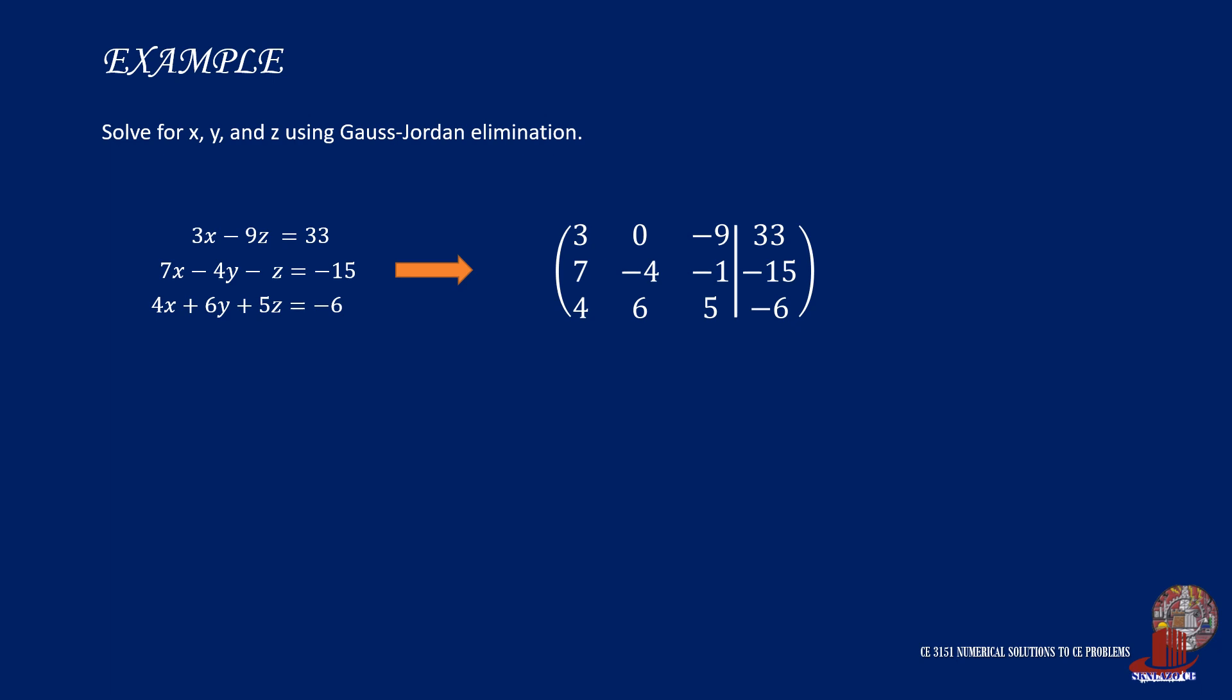Then we proceed with the elimination by creating a pivot element placed at element A11. In this case, we choose the first row to be the pivot row, and then we create 1 for the first element. That can be done by dividing the whole row by 3. So take 3 divided by 3 to have 1, 0 divided by 3 is 0, negative 9 divided by 3 is negative 3, and 33 divided by 3 is 11. Those are the new values of the first row, but the rest remains the same.